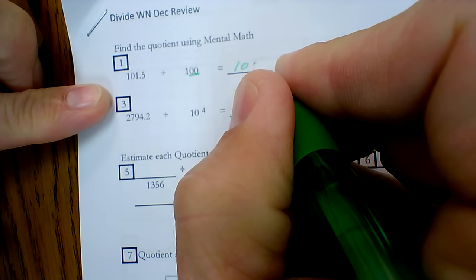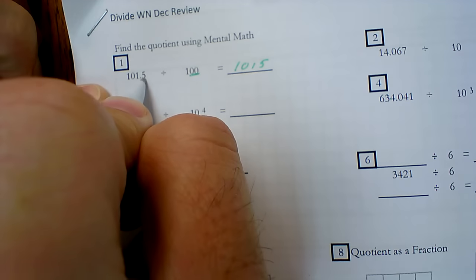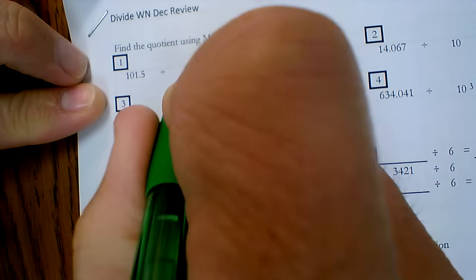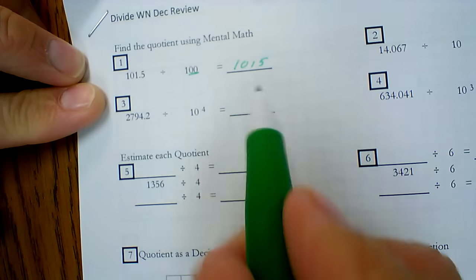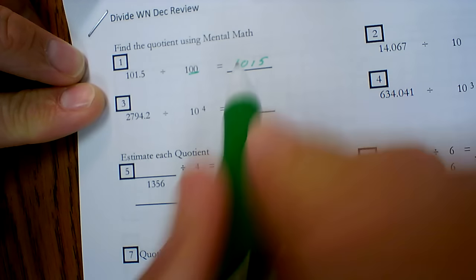So I'm going to copy the number, copy the exact same digits, so 1015. Two zeros in the 100, so that means I'm going to move the decimal point twice. Once, twice.